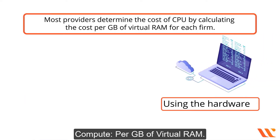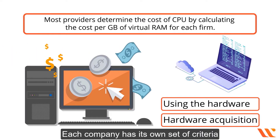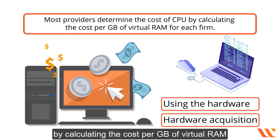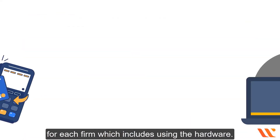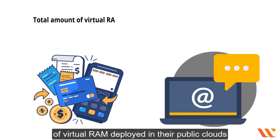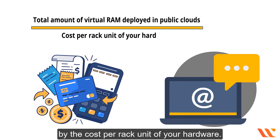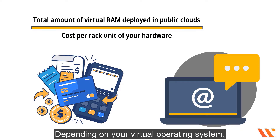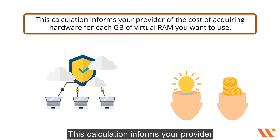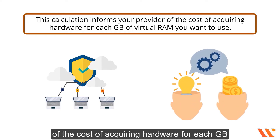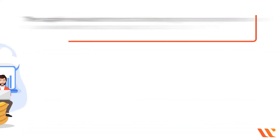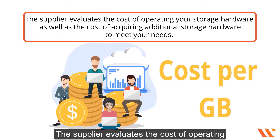Each company has its own set of criteria, including CPU utilization. Most providers determine the cost of compute by calculating the cost per GB of virtual RAM, which includes hardware costs. Providers calculate the cost per rack unit by dividing the total amount of virtual RAM deployed by the cost per rack unit of hardware. Depending on your virtual operating system, you may also have to pay for licensing and usage-based subscriptions.